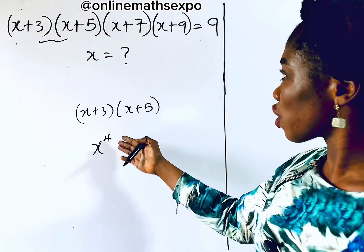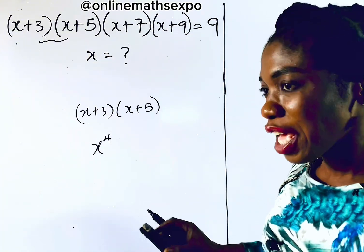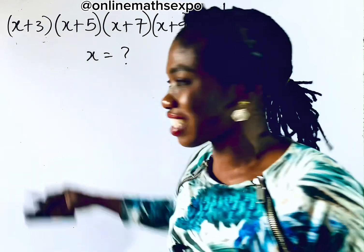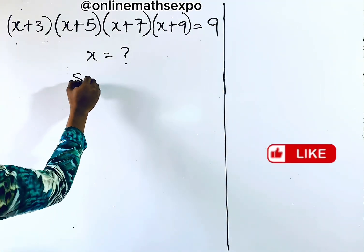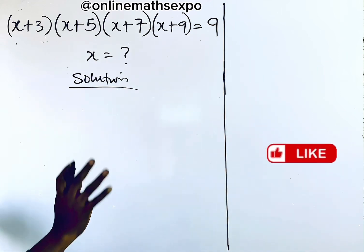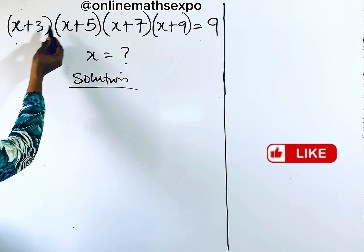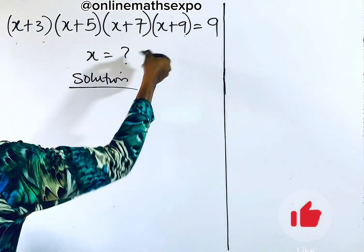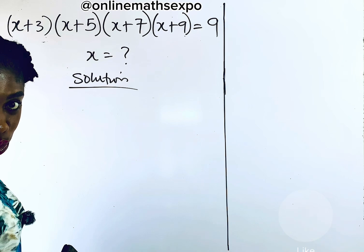So, to solve this kind of equation without expanding, let me show you the easiest way to go about it. To do this, we are going to begin with solutions. When you look at this, you observe that the numbers here — this is 3, this is 5, this is 7, this is 9 — it is increasing by a constant number, 2.